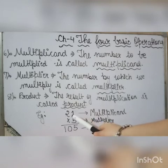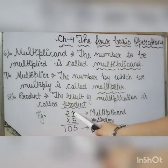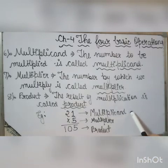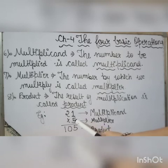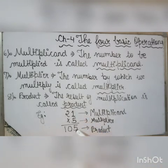In the example 21 multiplied by 5 equals 105: 21 is to be multiplied, so 21 is the multiplicand. We multiply 21 by 5, so 5 is the multiplier. Their result, 105, is known as the product.